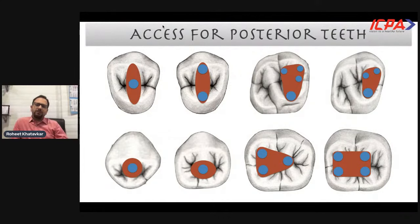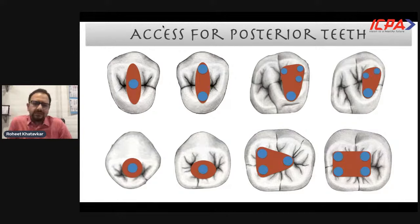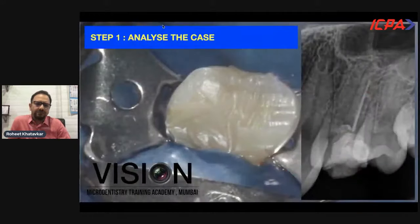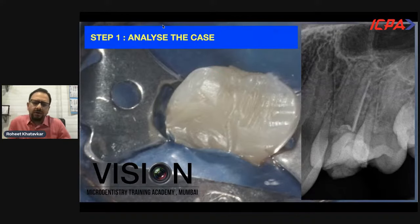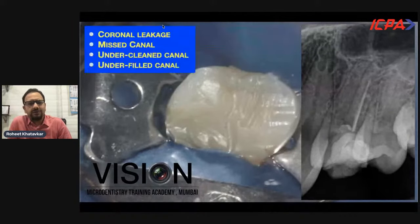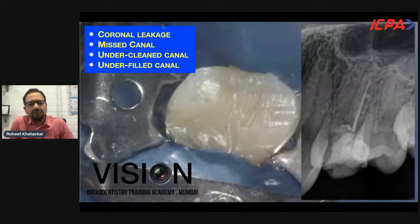For posterior teeth, access cavity designs are largely dictated by the presence of canals. The location of canals is always slightly more mesial in posterior molars — both mandibular and maxillary — positioned more towards the mesial surface or mesial half of the tooth. In premolars, canals are usually in the center. This case was referred to me for re-treatment after root canal treatment done six months back — the preoperative radiograph clearly showed one canal was missed and the other was severely underfilled.